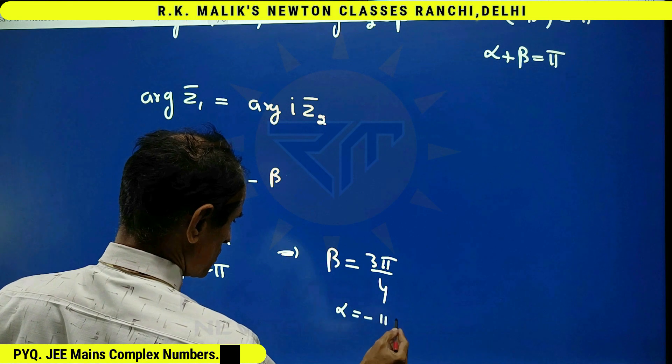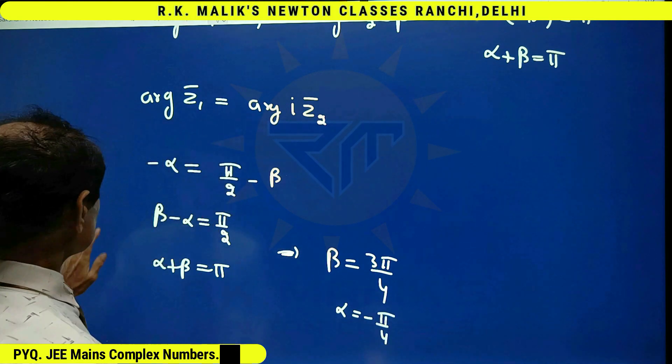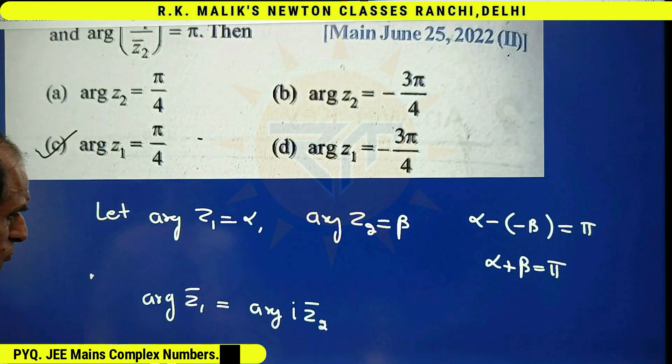Hence, alpha becomes minus pi by 4. Hence, I can say c is the correct choice.